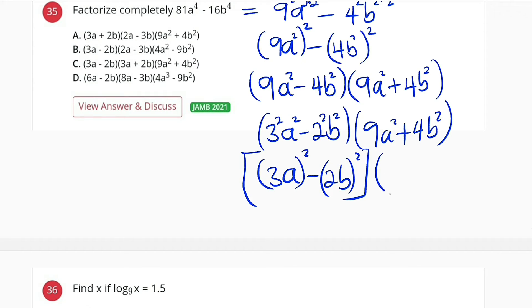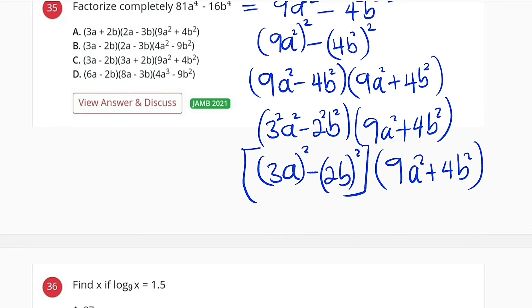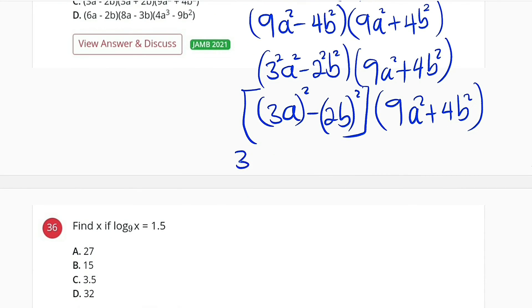Then I multiply by 9a squared plus 4b squared. This is also a difference of two squares. I can also factorize it. I take the first term 3a, I subtract the second term 2b, then I multiply by 3a.